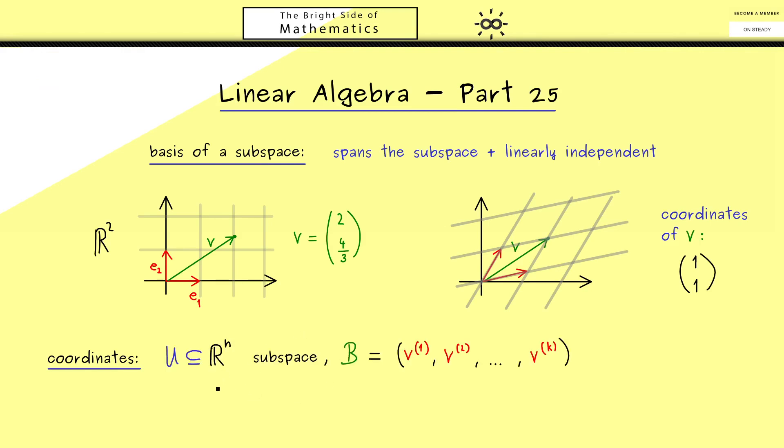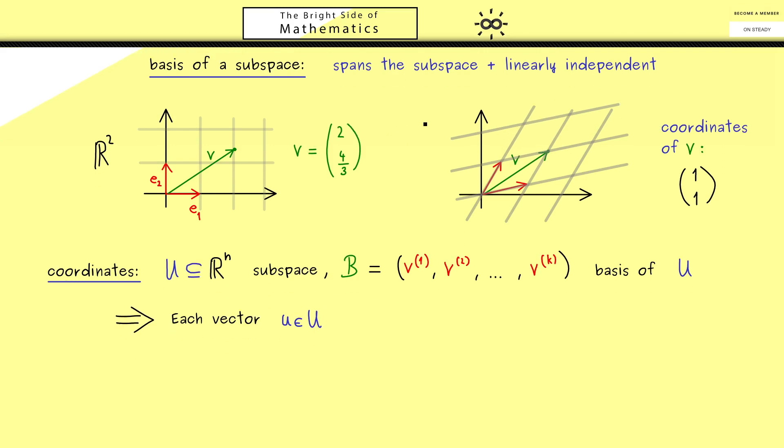Now the assumptions we need here is that we have a general subspace in R^n. We call it U and B should be a basis of U. And now what we do is that we take any vector lower case u in our subspace U. And we know by assumption that this u can be spanned by the basis vectors v^(1), v^(2) and so on. There we use the first term that the basis spans the whole subspace. This means our vector u can be written as a linear combination. So we have λ₁ times v^(1) plus λ₂ times v^(2) and so on until we have λₖ times v^(k). So this is a linear combination with coefficients with real numbers λⱼ.